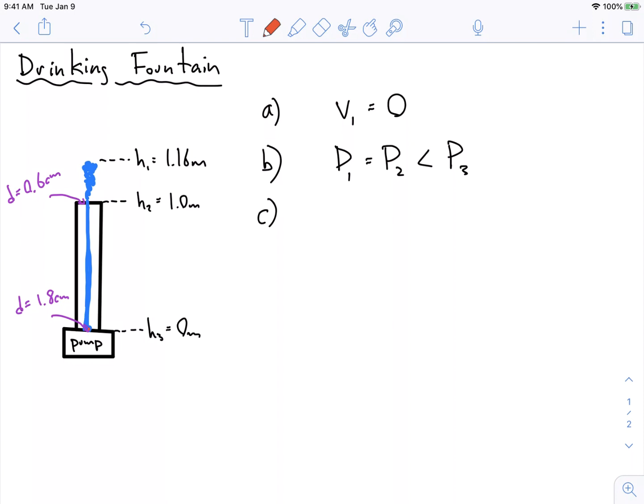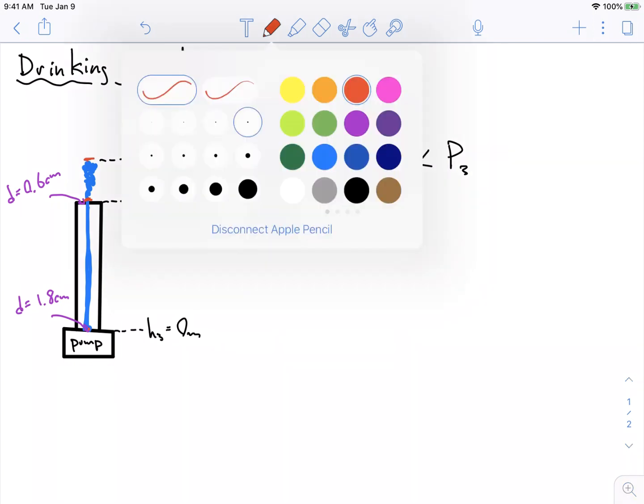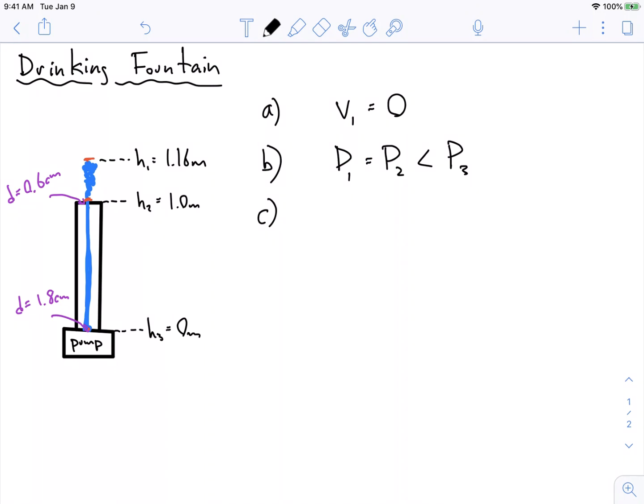Part C asks us to think about which one is better - Bernoulli's equation or the continuity equation. Well, the continuity equation tells us about how the velocity changes when the thickness of a pipe changes. But the only velocity we know is the velocity at the top here. So something that compares the velocities out in the open - that's just Bernoulli. Bernoulli can help us do that.